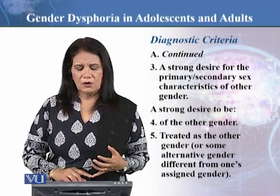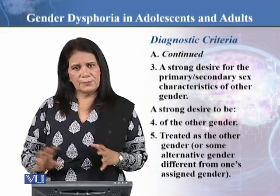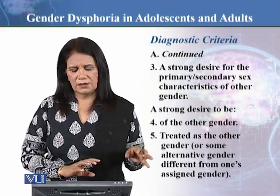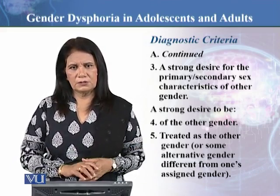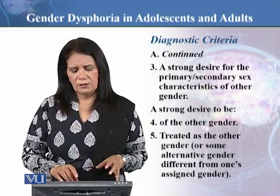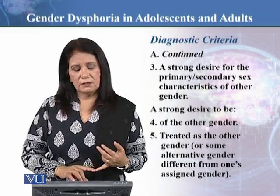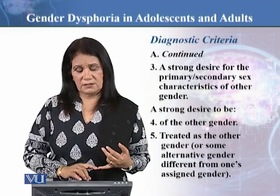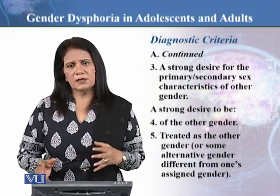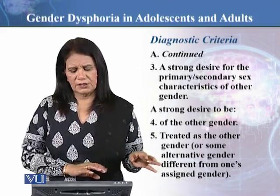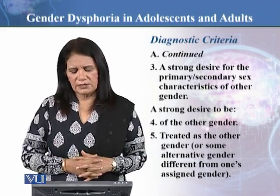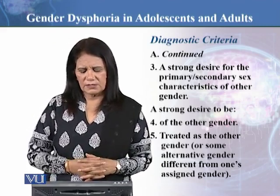Feature three is a strong desire for the primary and/or secondary sex characteristics of the other gender. Feature four is a strong desire to be of another gender. Feature five is a desire to be treated as the other gender — not only to be that gender, but also to expect others to treat them accordingly — or as some alternative gender different from one's assigned gender.